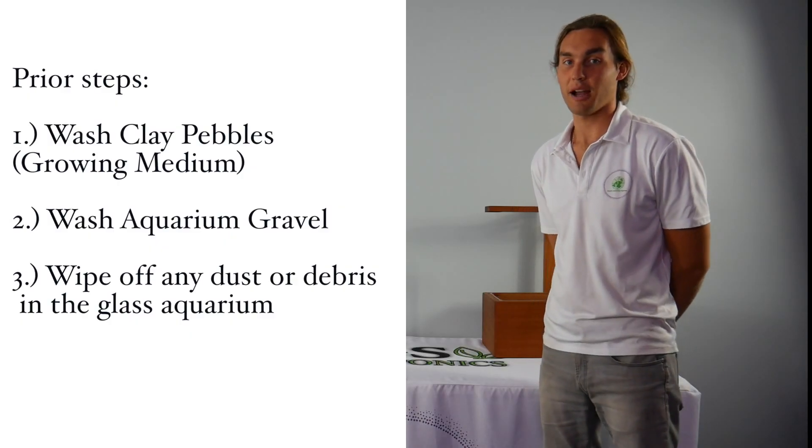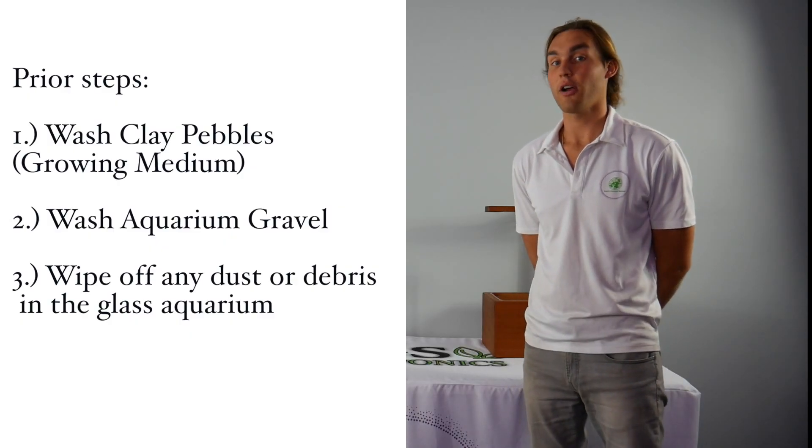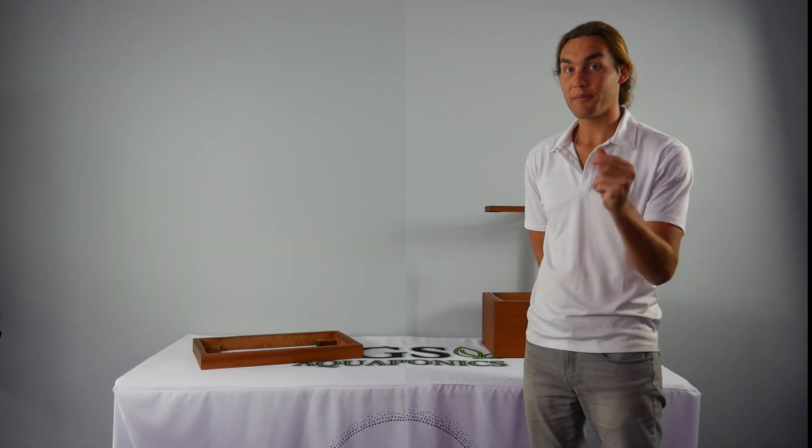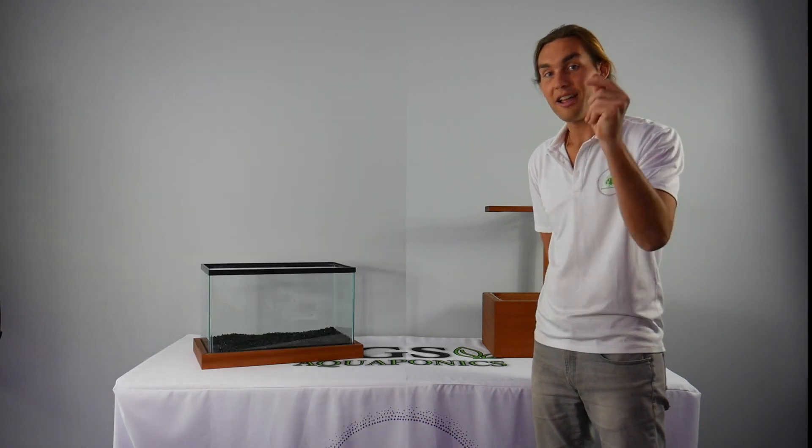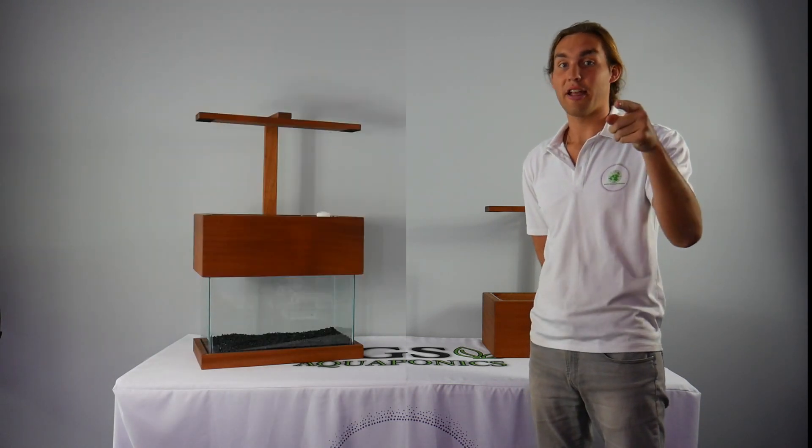Once you get done washing off the rocks, find the desired location for your aquaponics system, add the footer, then place your glass aquarium inside that footer, add the aquarium gravel, then add the grow bed and then the clay rocks.